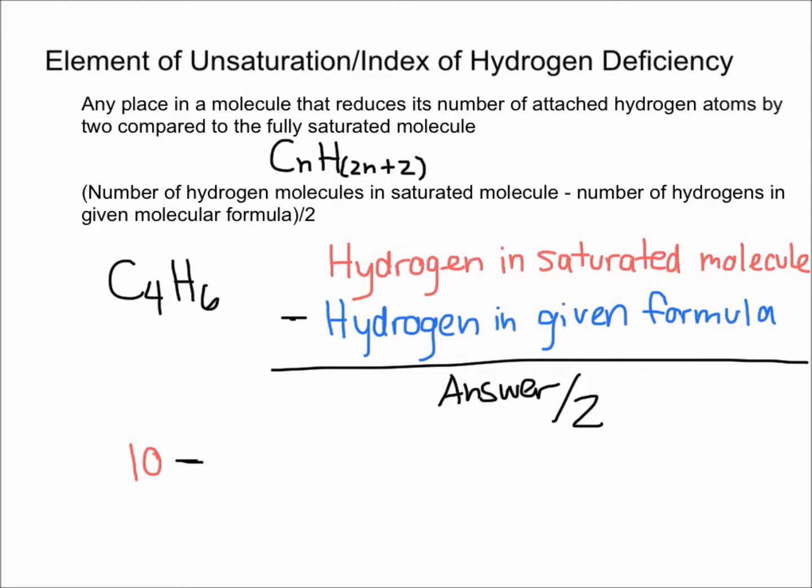Now you subtract the number of hydrogens in the given molecular formula, which is 6. So you do 10 minus 6, and then divide that final answer by 2. You get 4 divided by 2, which equals 2.